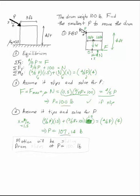I'm clearly going to get to 100 before I get to 107. So I can say the motion will be sliding and the drum slides at P equals 100 pounds.